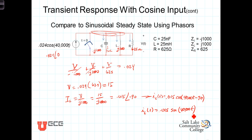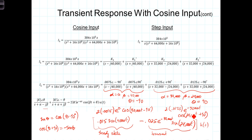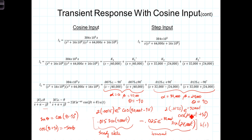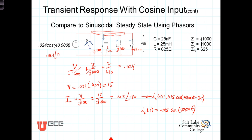Looking back at the sinusoidal steady state component from the Laplace technique, we found it was 0.015 sine of 40,000T — exactly matching the phasor result. The Laplace technique gives the complete total response: both the transient and the steady state. The transient dies out, leaving the steady state. If only the steady state is needed, it is far less computationally intensive to use the phasor domain. But for the complete response, the Laplace transform provides it all.